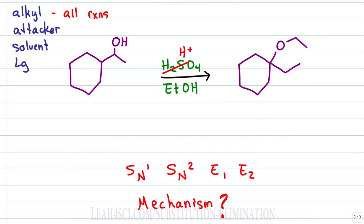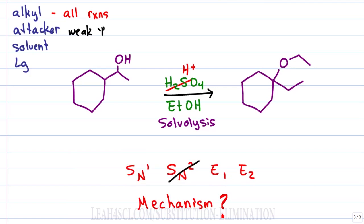But if all I have is ETOH, what is my attacker? This has to be a solvolysis reaction where the solvent is both the solution and the attacker. ETOH is neutral, that means it's weak and not strong enough to do a direct attack. Instead it has to wait for a carbocation to form. If the attacker is weak, we are looking at a one type reaction. That means we rule out SN2 or E2 because ETOH is not strong enough for a direct attack.